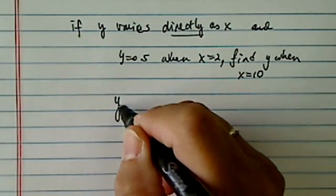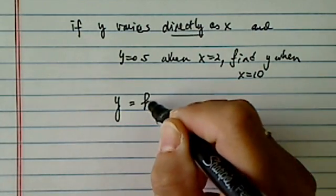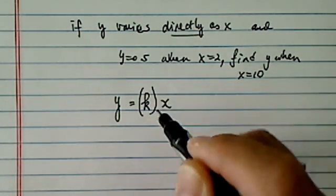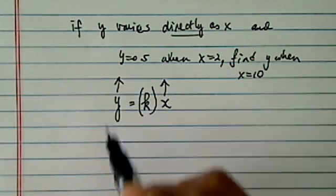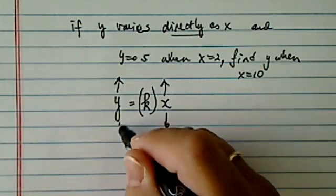So it says if y varies directly with x, this is all it's saying. Look, when x goes up, y is going to go up. If x goes down, so does y.